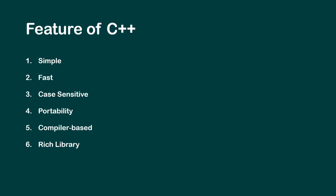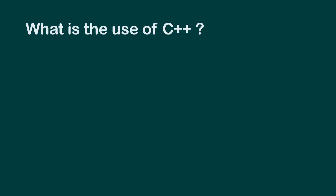C++ is used for building system software, game development, application software, and more. That's why C++ has rich library support. And seventh is object-oriented programming — keeping data in the form of objects.